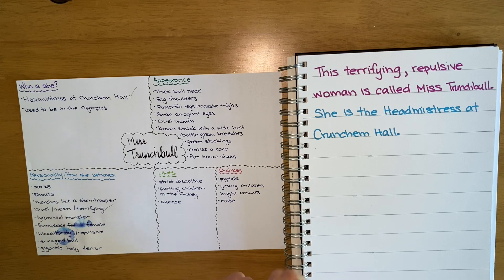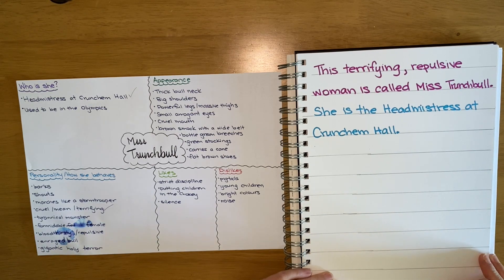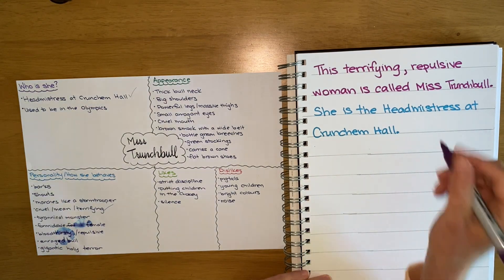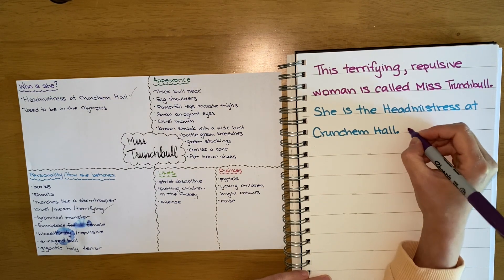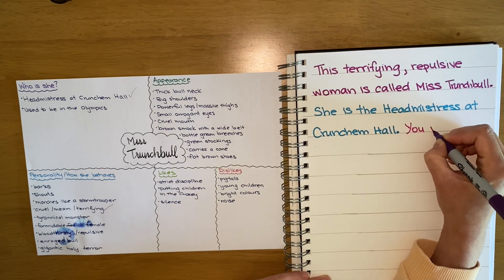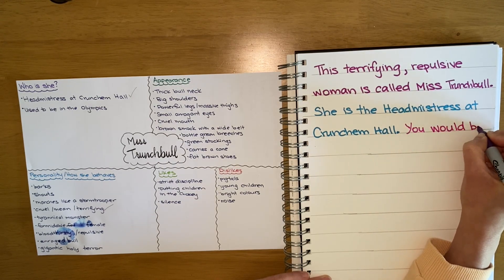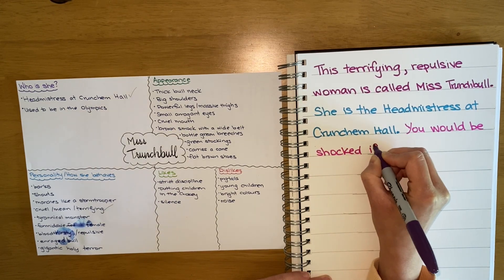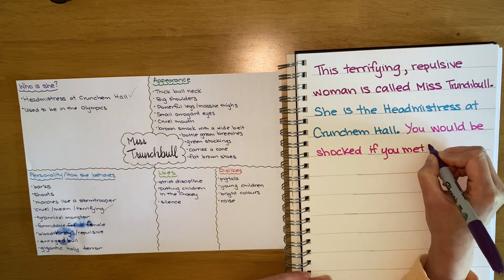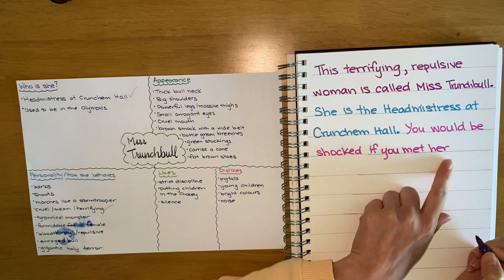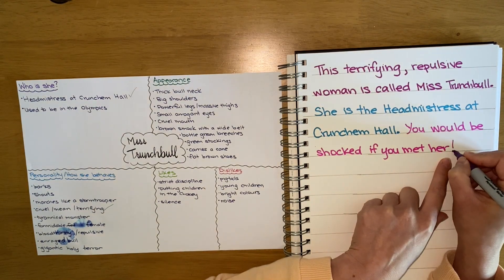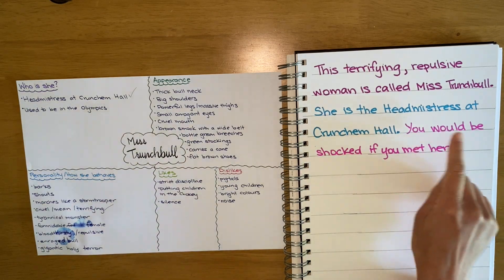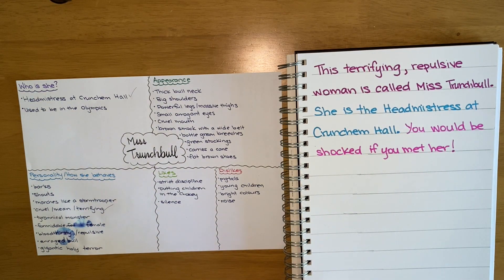So if you were to see Miss Trunchbull, how would you feel? I think I would be absolutely shocked if I ever saw her — I'd be really scared. So I'm going to write a sentence about how someone would feel if they ever met Miss Trunchbull: 'You would be shocked if you met her!' I think an exclamation mark is good punctuation for that sentence. Pause the video and write a sentence about how someone would feel if they ever met Miss Trunchbull.